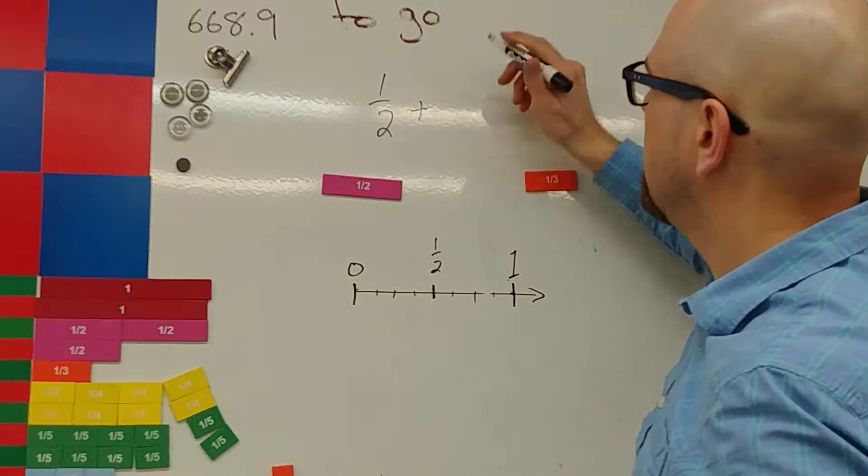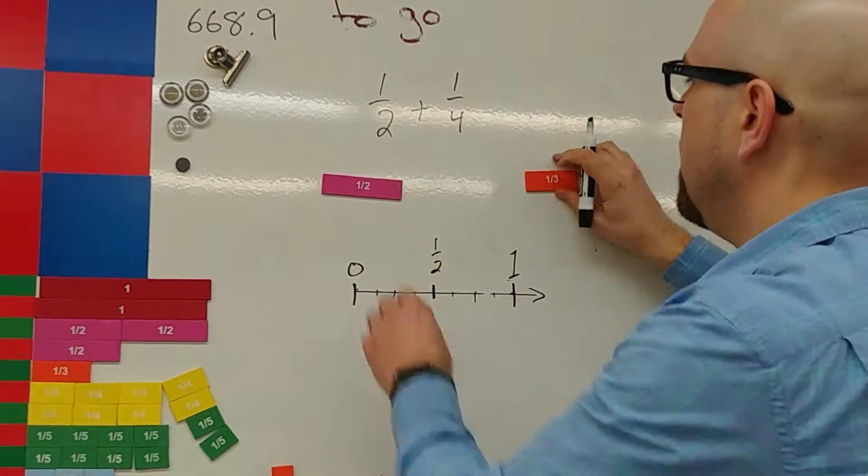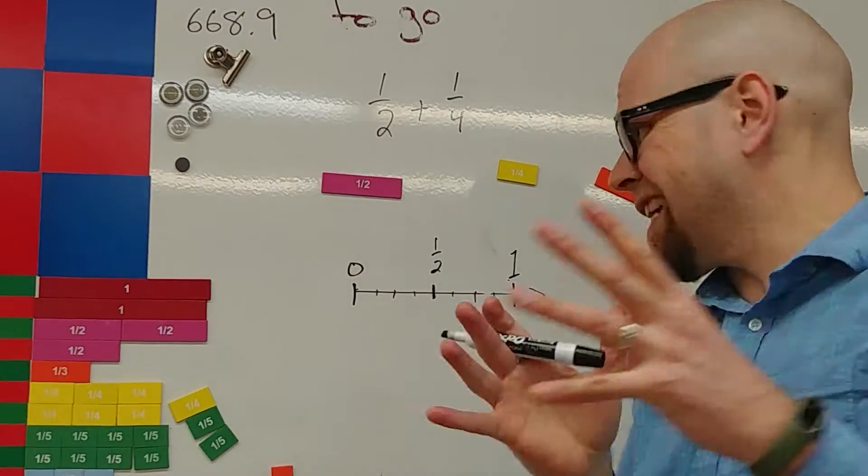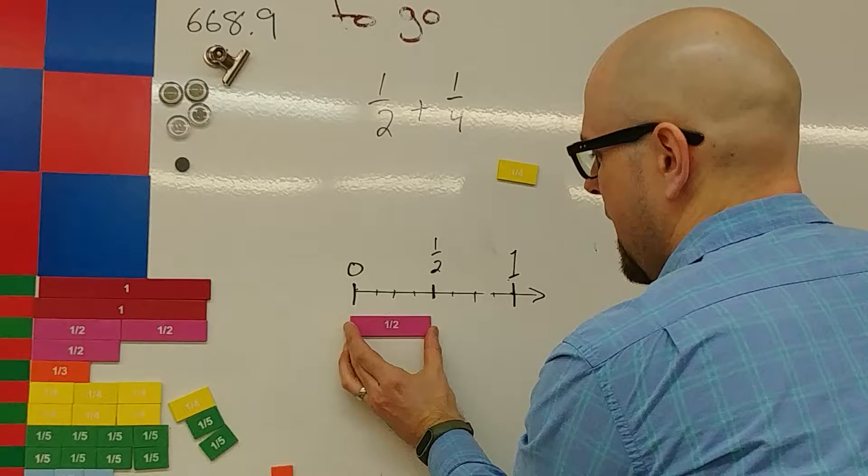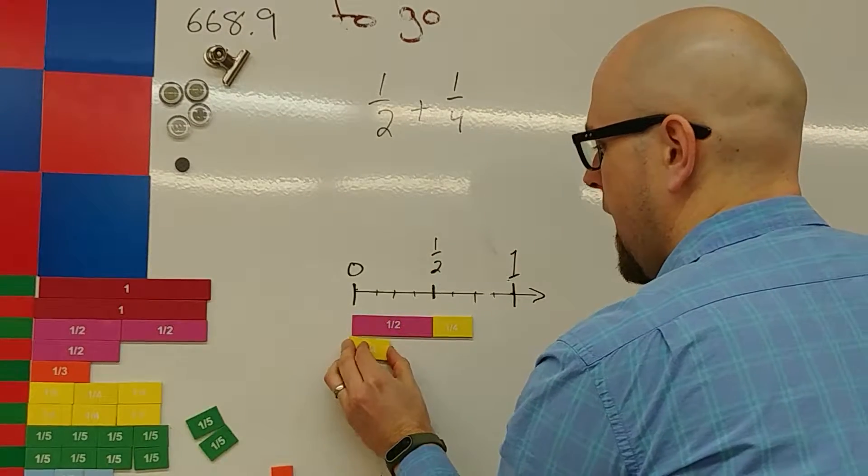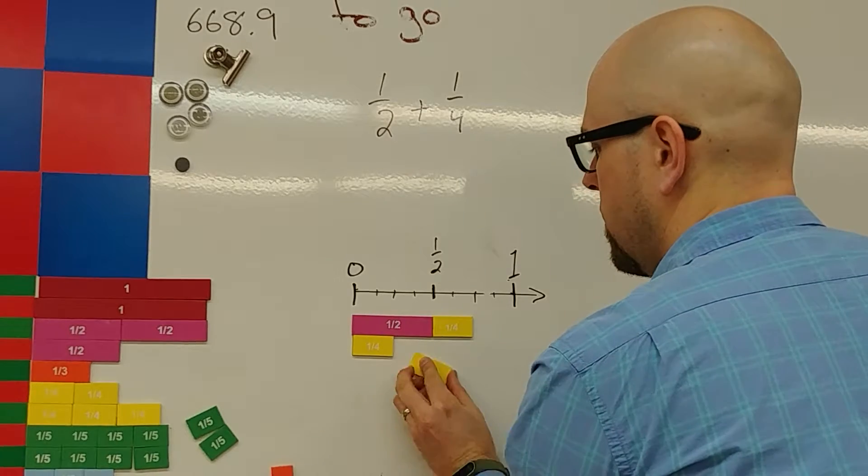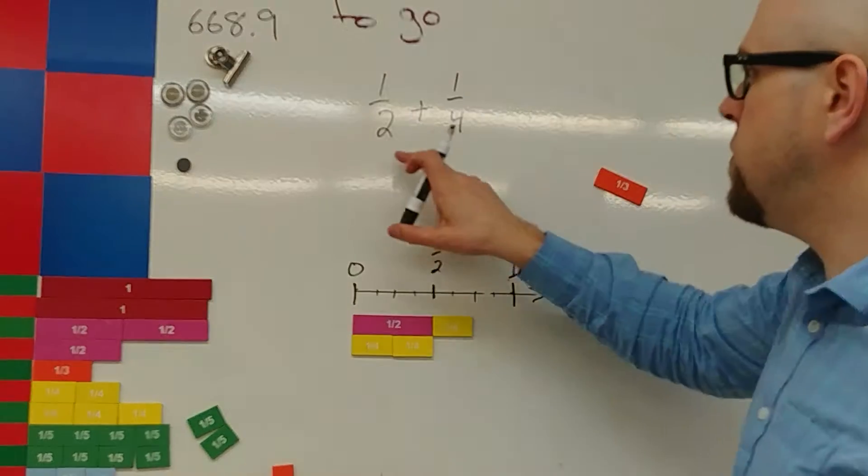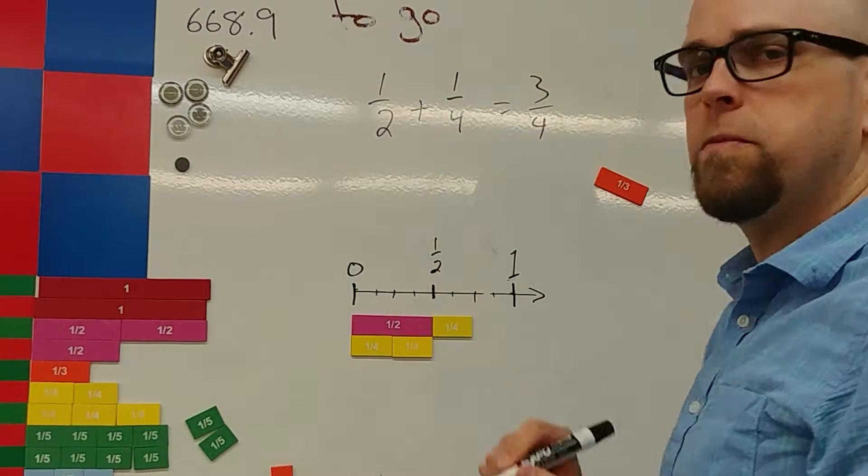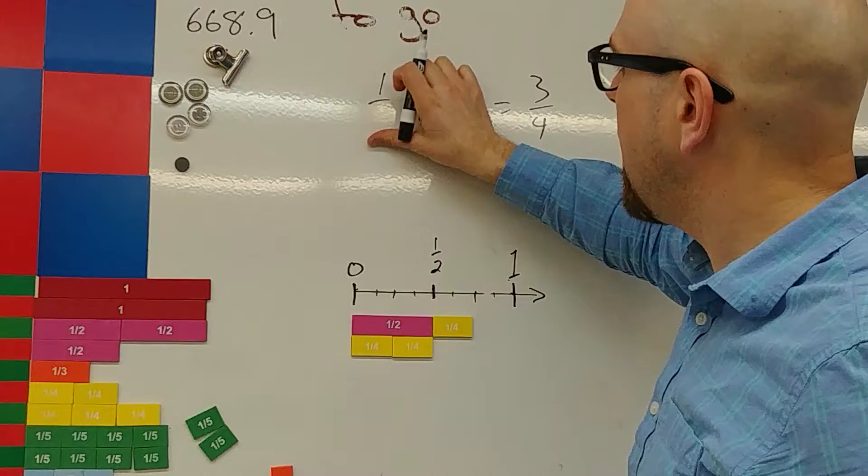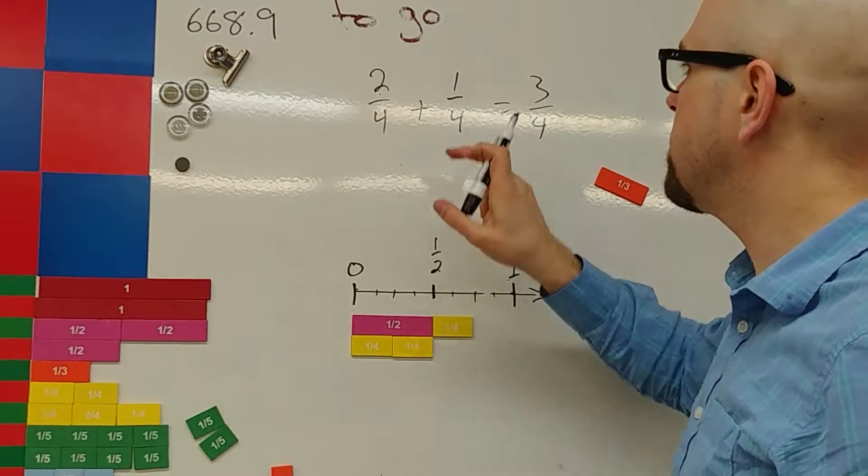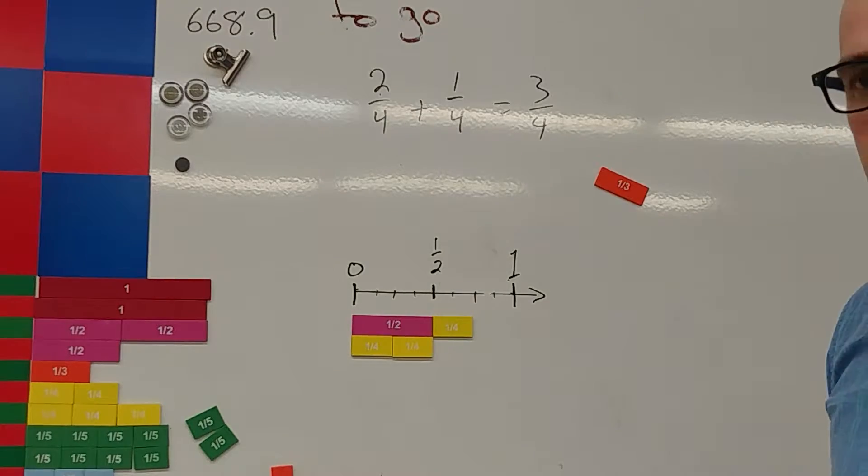First I'm going to start with an easy one. If I have a half plus a quarter, a half plus a quarter is actually pretty easy, because if I add half plus a quarter, you know what I can do is instead of a half, I can call it two quarters, because two goes into four. So I can say that equals three quarters, and that's easy for me to see. Two quarters plus one quarter is one, two, three quarters.